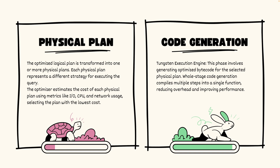Finally, code generation happens — generating the bytecode for the selected physical plan. Spark uses the Tungsten execution engine for this. We can go into the details of Tungsten in a separate video, but for now it is out of scope; we are focusing specifically on the Catalyst Optimizer.